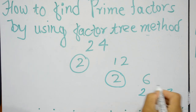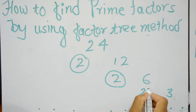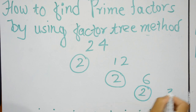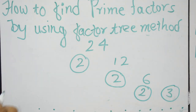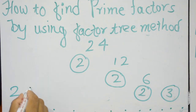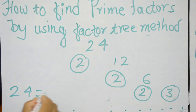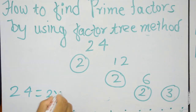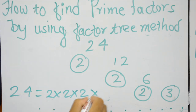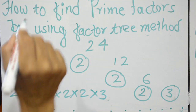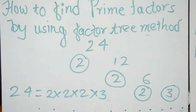Now this 2 and 3 are both prime numbers. So the prime factors of 24 are 2 × 2 × 2 × 3. See you in the next lesson.